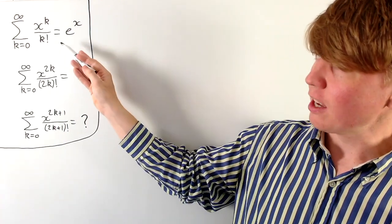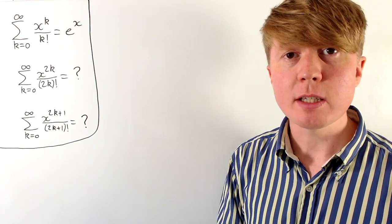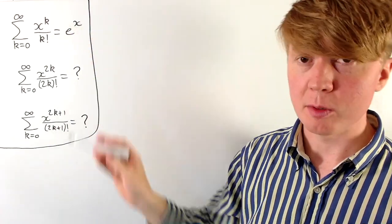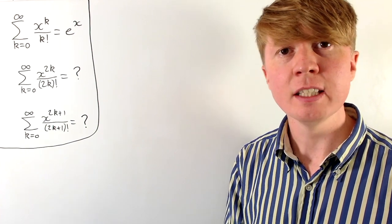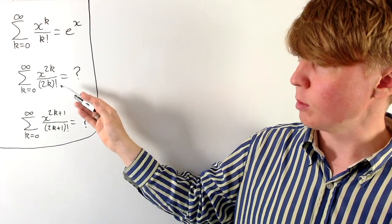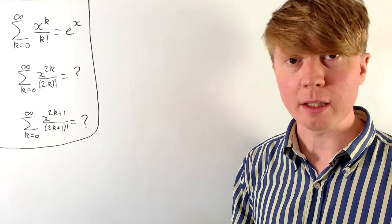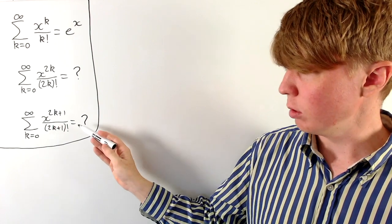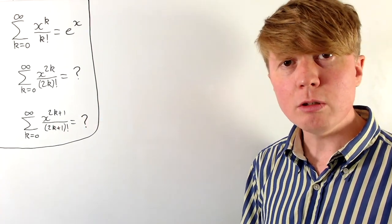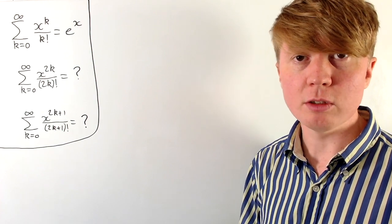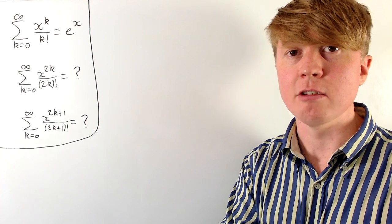We know that the sum of x to the k over k factorial gives us e to the x. We're going to be interested in taking sums of all these terms but only including certain ones — for example, just the even terms (0th, 2nd, 4th, and so on), or just the odd ones. We'll also look at taking every fourth term, and then taking the sum of every nth term at the end to see how this generalizes.